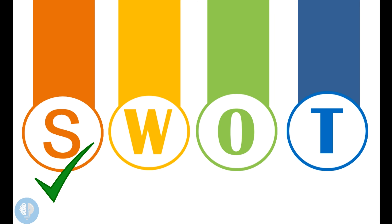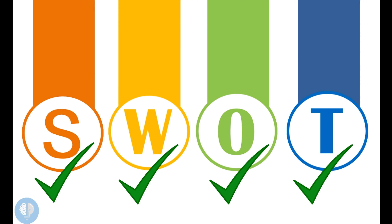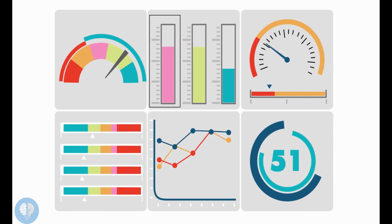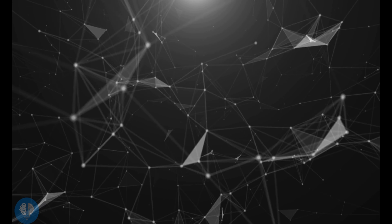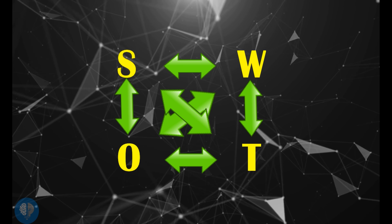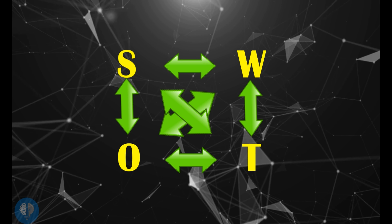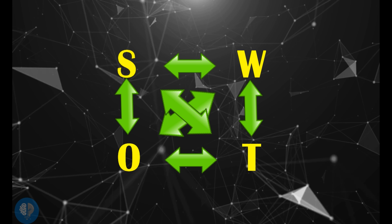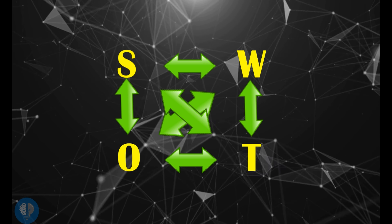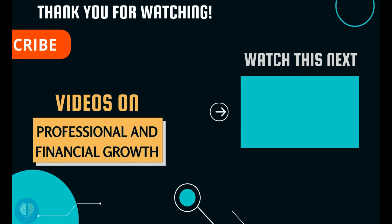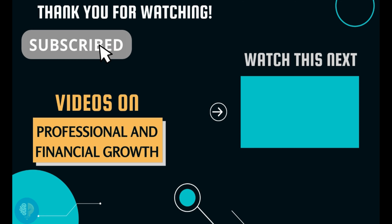Now that points have been collected for all elements, an organization can go ahead and make future action plans. All four elements need to be examined to find connections among them. A lot of the time, the strengths of an organization can be used to exploit opportunities or to mitigate threats. Thank you for watching this video on SWOT analysis, where we answered: What is SWOT analysis? Why is SWOT analysis important? And how to do a SWOT analysis with examples?